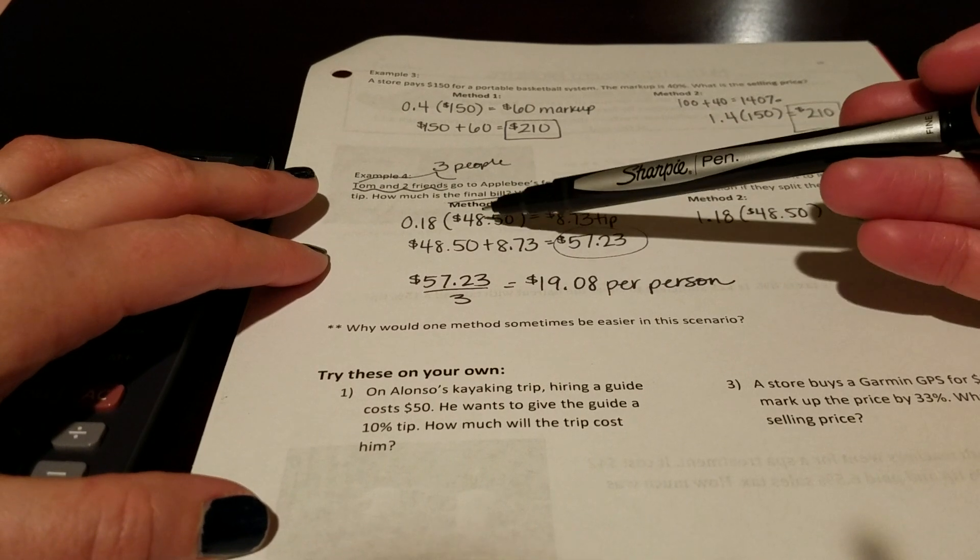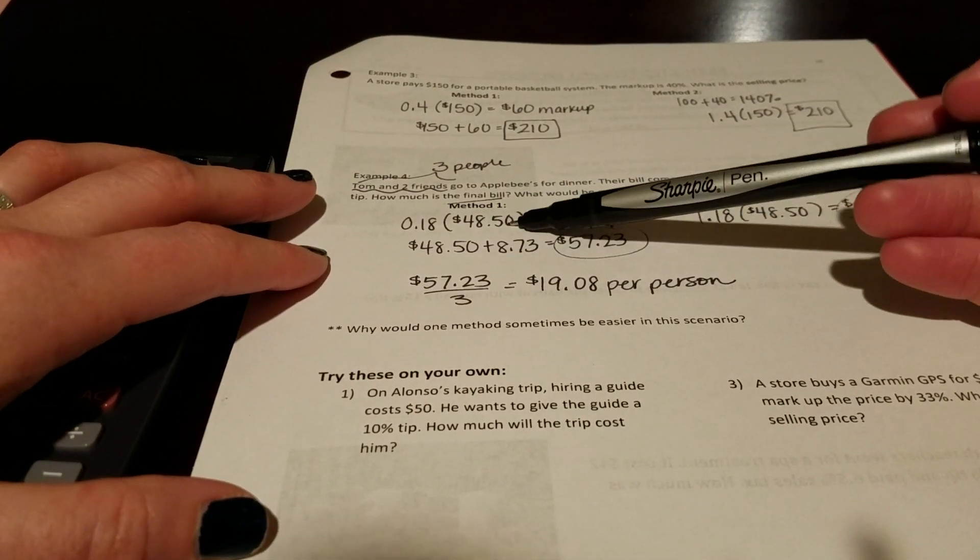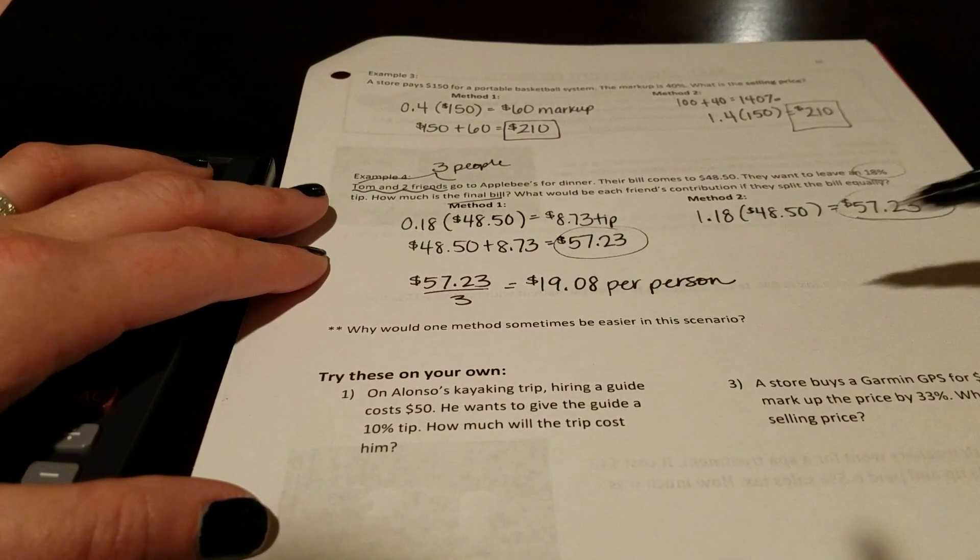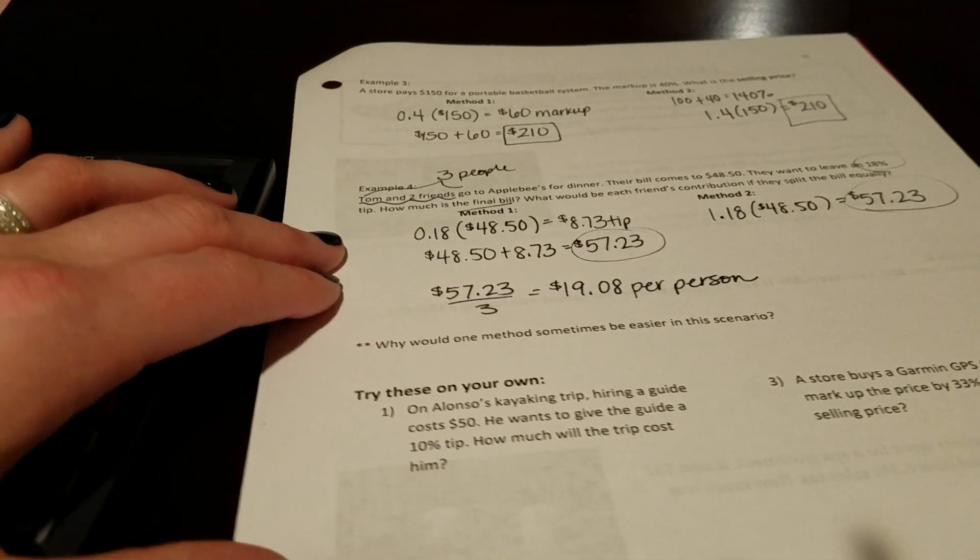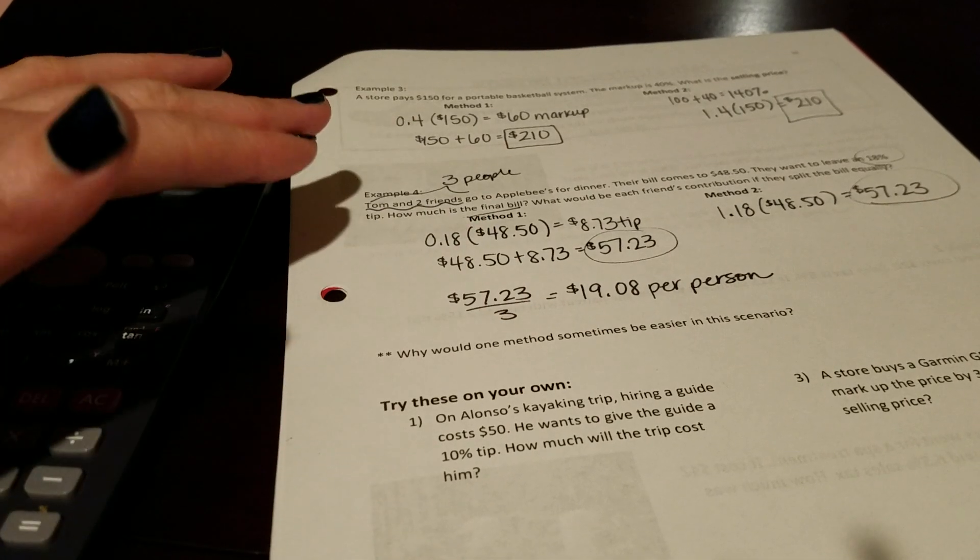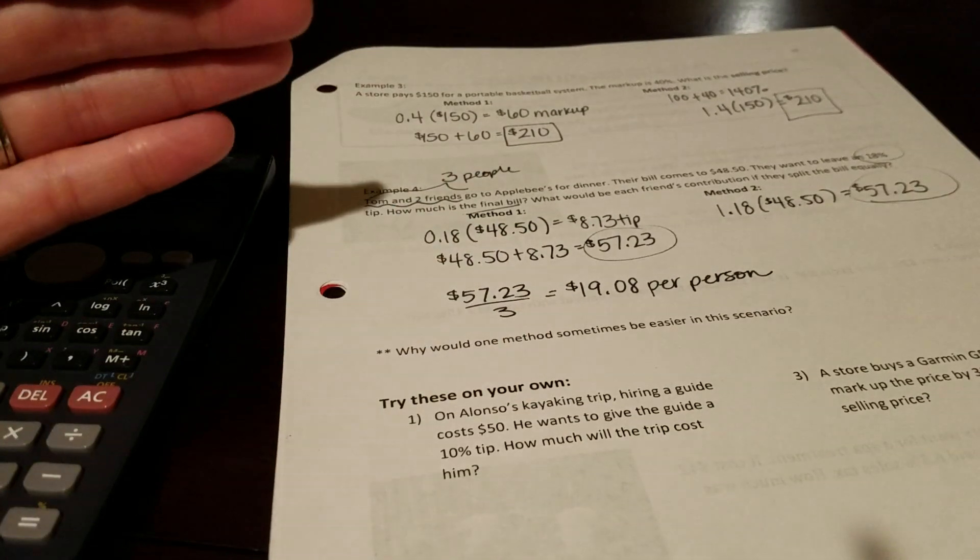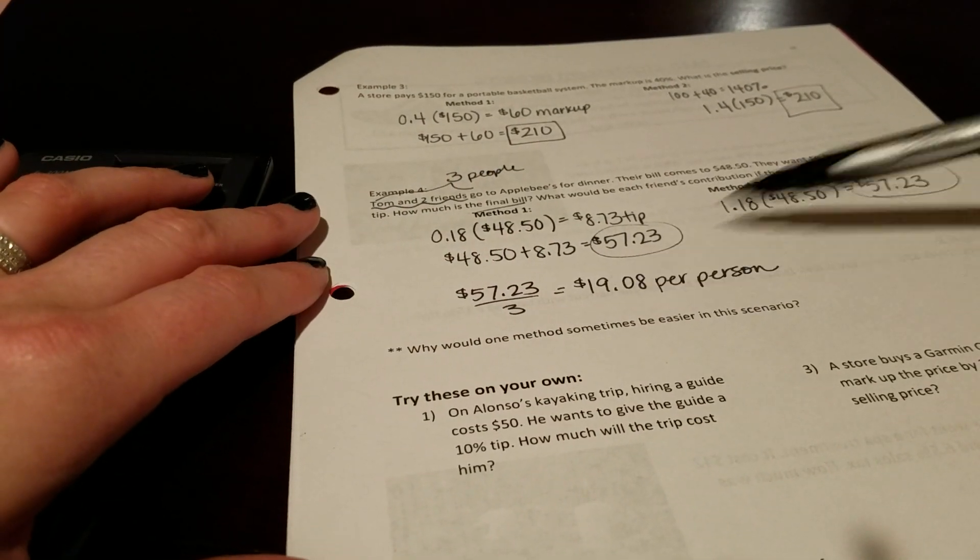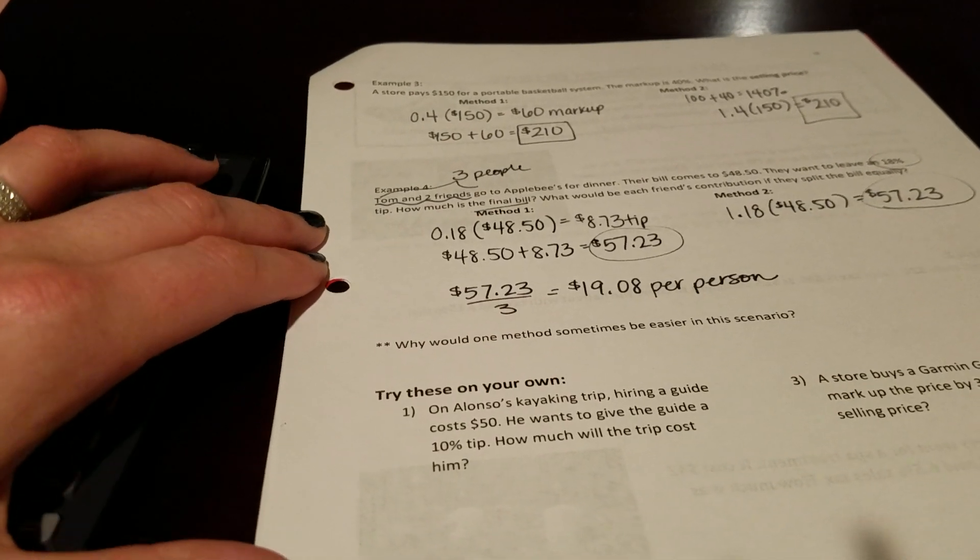In that case, you would have to split up the $48.50 first between the three friends and then split your tip between the three friends as well. If you were just looking at the total and each putting in cash and just said to the waiter, here you go, here's the pile, keep the rest for you, using method two would probably be an easier situation.